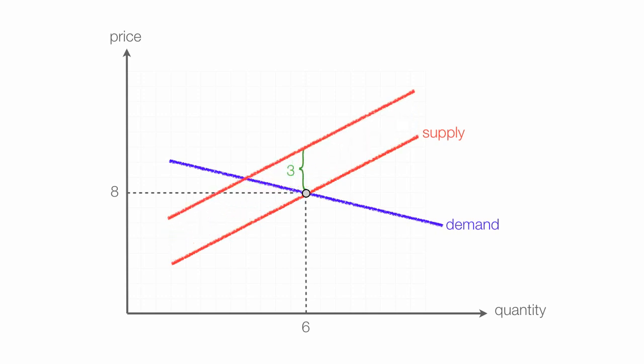This would be an example of a retail tax, like on gasoline or cigarettes. I have a new equilibrium point at the green dot, and quantity is 4, and price is 9.